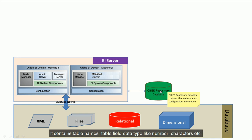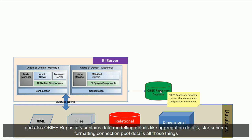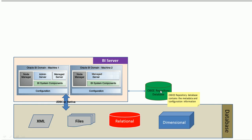By metadata, it contains the table name, table field type, whether it is a number or text. OBIEE repository also contains data modeling details like aggregation details, star schema format details, connection pool details, and all those things.